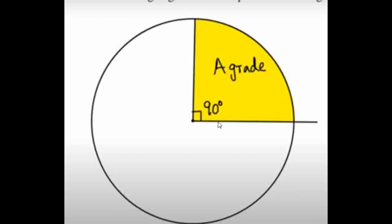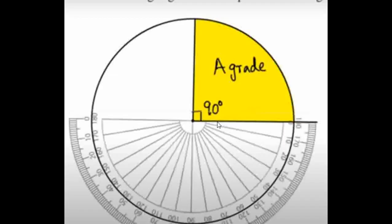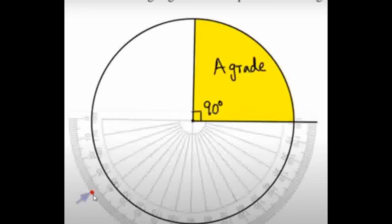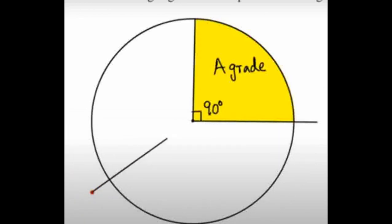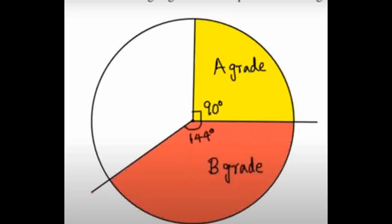Then you can see the angle of B grade. Then if you see the protractor — what does it look like? That's the right angle. It's 144 degrees. Then 0, 10, 20, 30, 40, 50, 60, 70, 80, 90, 100, 110, 120, 130, 140, 141, 142, 143, 144. Okay, 144 degrees, then it's B grade.